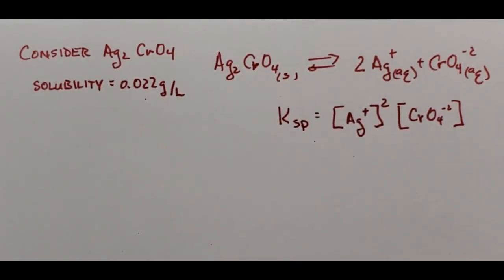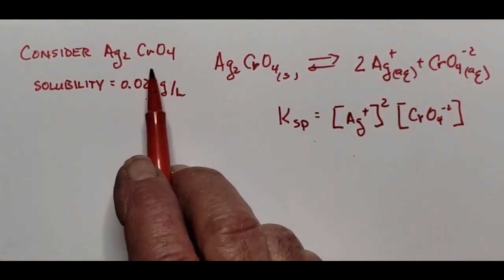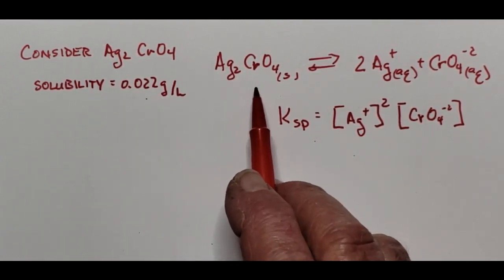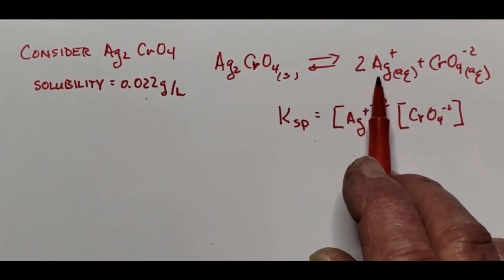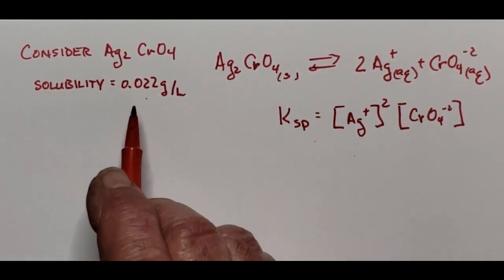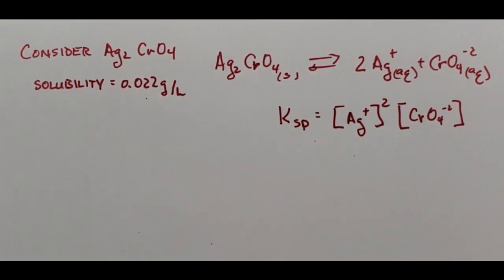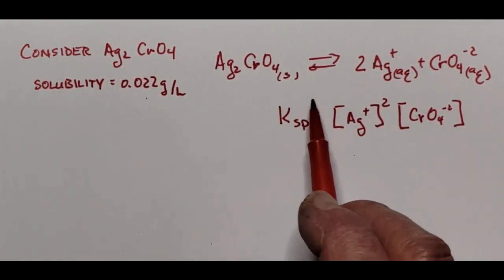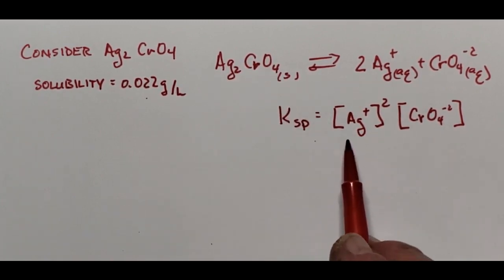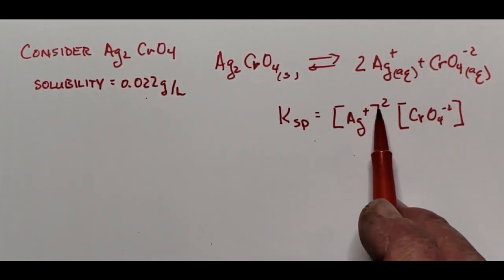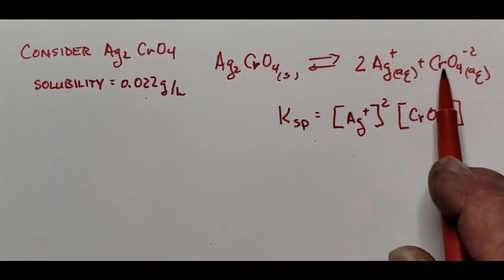This problem is much like number two on your pre-lab, where we're given the solubility and asked to calculate the Ksp. Consider silver chromate, Ag₂CrO₄. When it dissolves, the solid sets up an equilibrium to give two silver ions and one chromate ion. It's not very soluble — 22 milligrams per liter. The equilibrium expression doesn't include the solid, so it's just the silver ion squared times the chromate ion.